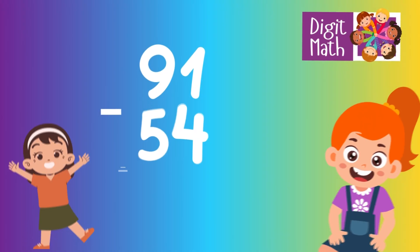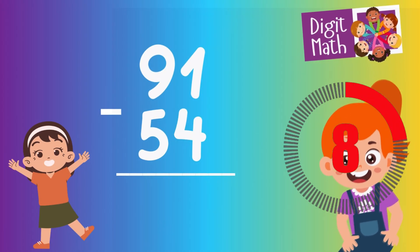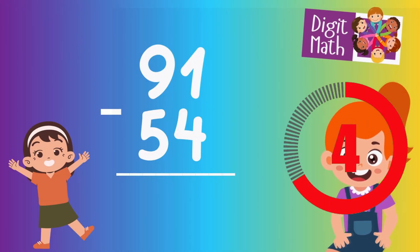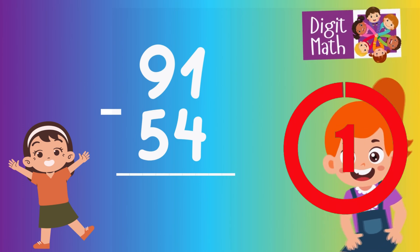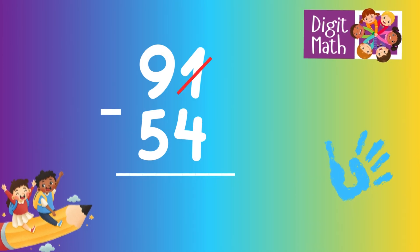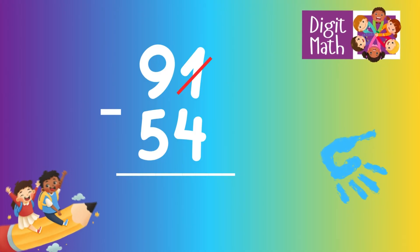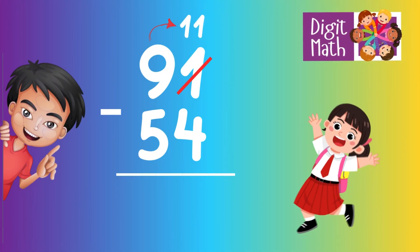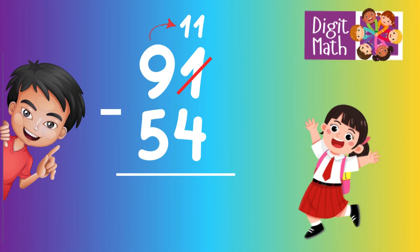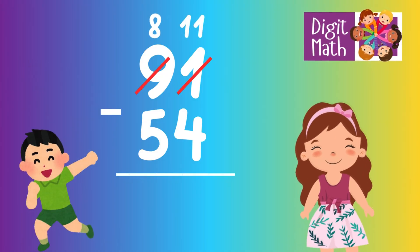91 minus 54 is... Time to think. In the Units column, we have 1 minus 4. Since it's not possible to subtract 4 from 1, we need to borrow from the Tens column. In the Tens column, we have 9. We take 1 from the Tens, leaving 8 in the Tens column and turning the Units column into 11.